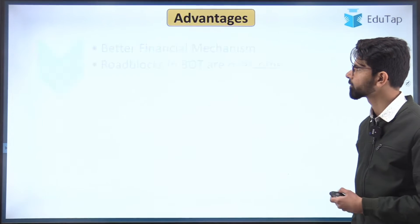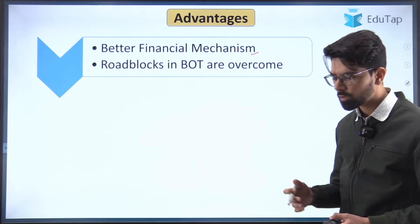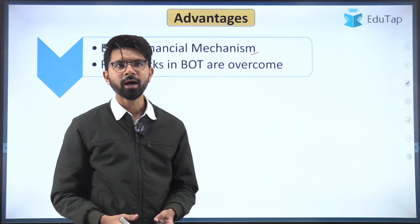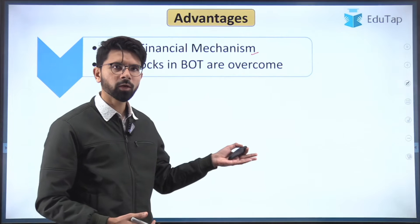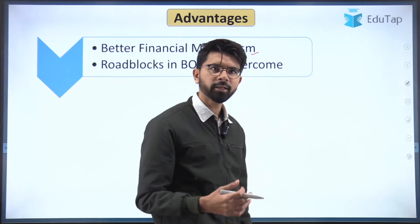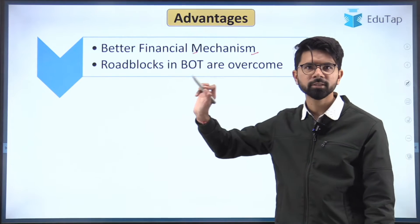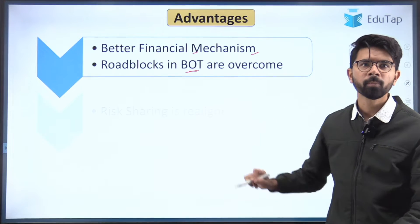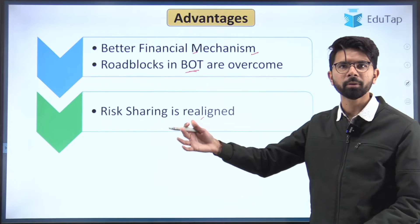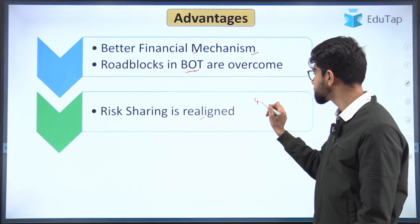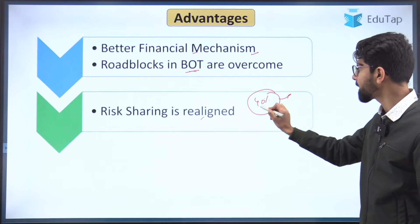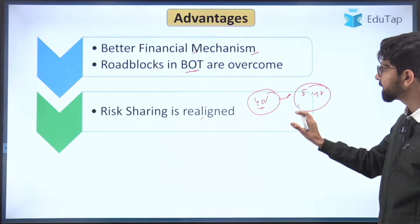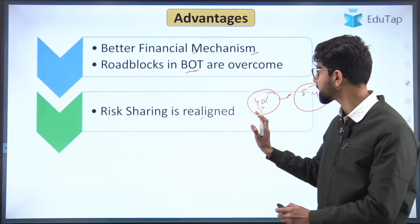Now let us understand the advantages of HAM. The first is a better financial mechanism — there was reluctance from the private sector in the BOT model because large finances had to be managed alone. That is mitigated in the hybrid annuity model as the government shares 40% of the total project cost, and the roadblocks in the BOT model are overcome. Apart from that, the risk sharing is realigned between the public and private entity. The 40% public finance will be provided over a period of five years.